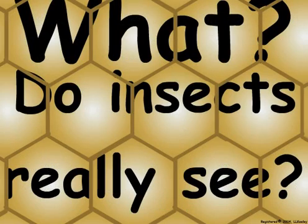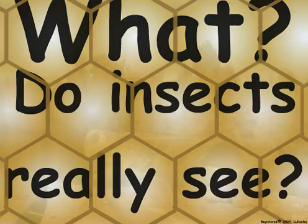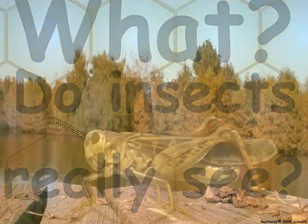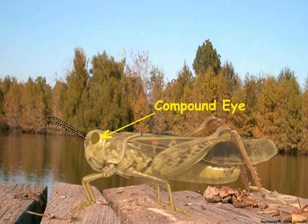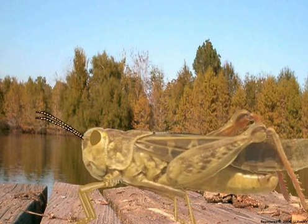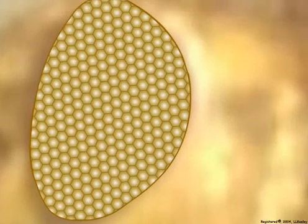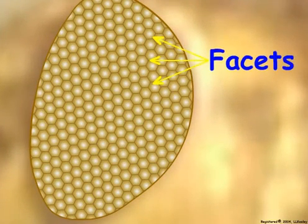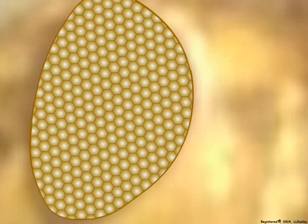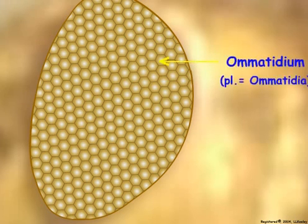Let us examine the structure of the insect compound eye and learn how the compound eyes visualize the landscape for insects. The main visual structure of insects is the compound eye, which appears to be comprised of many hundreds or thousands of tiny facets. Each facet is actually the corneal lens for an individual photoreceptor unit called an ommatidium.